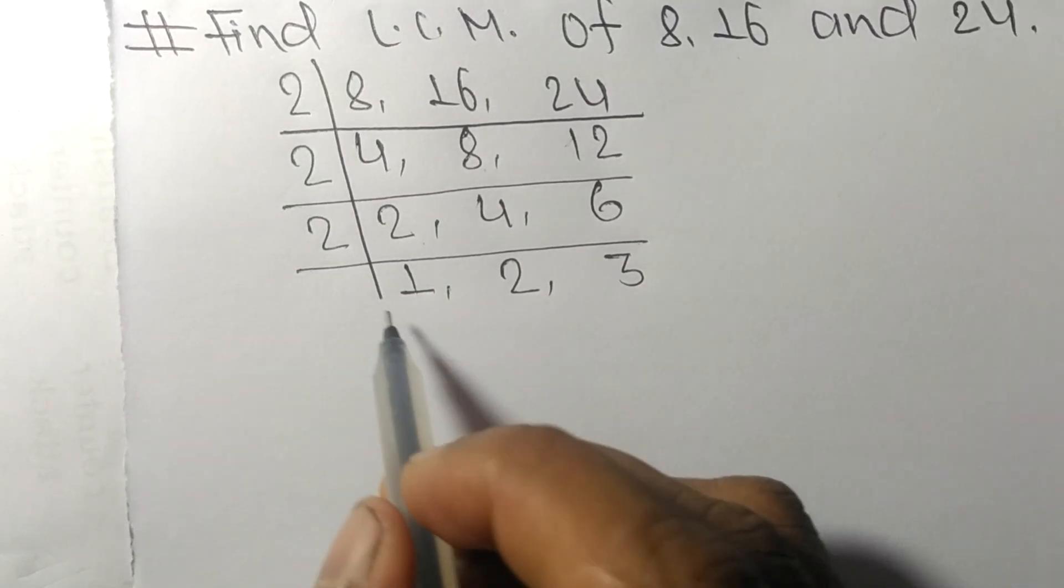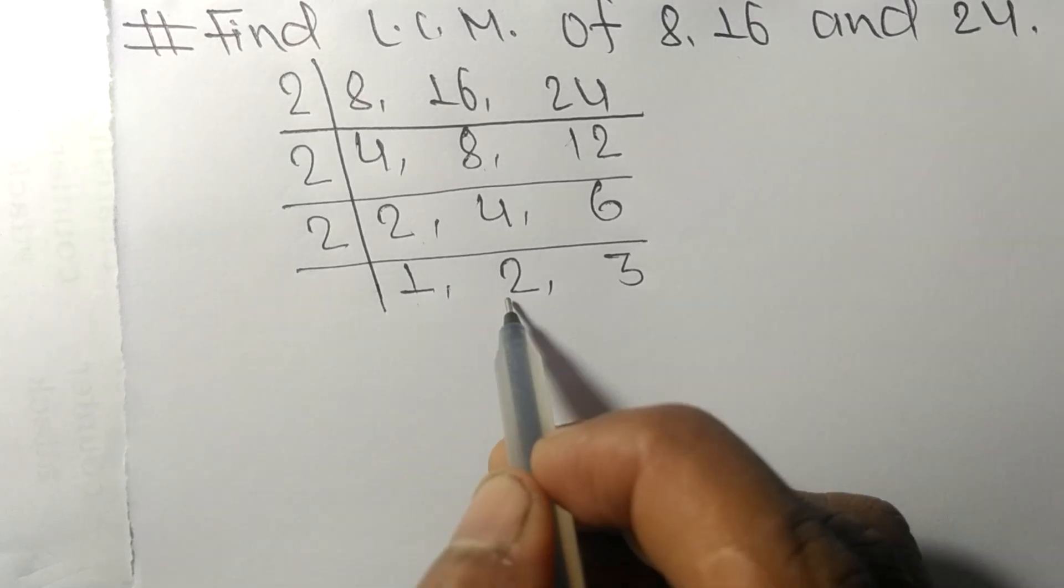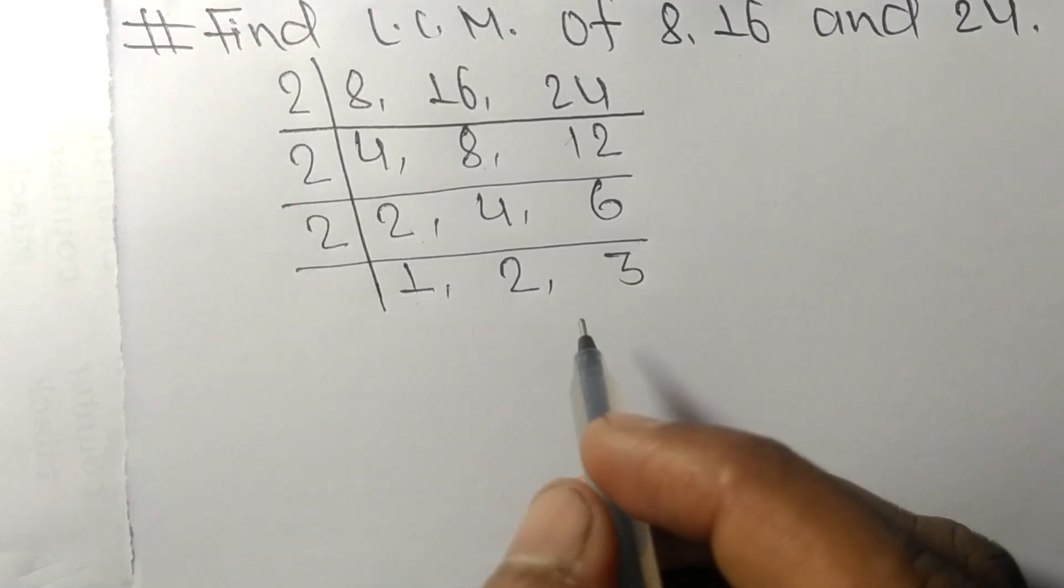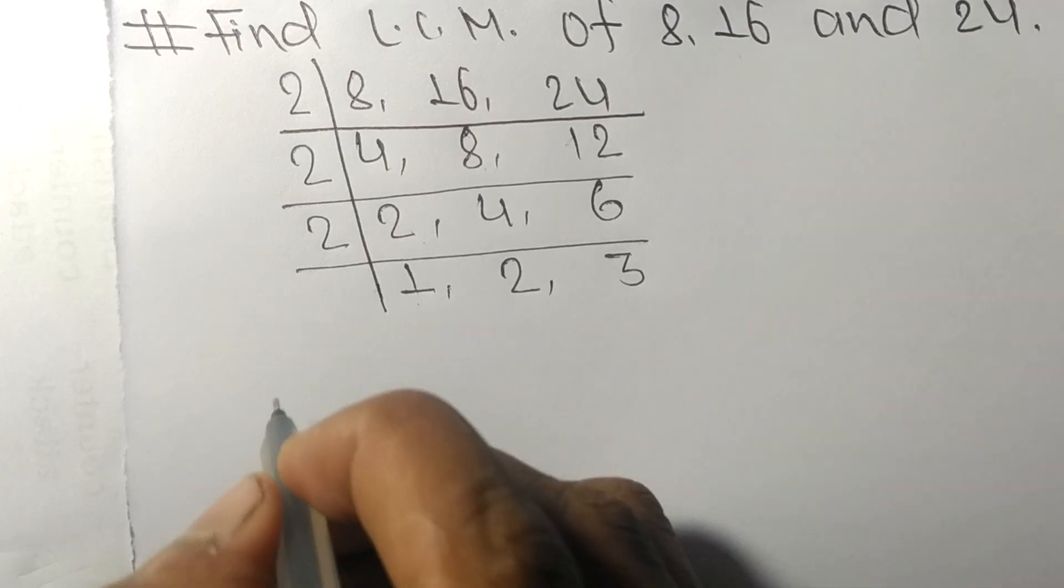So now we got 1, 2, and 3 which are not exactly divisible by the same number.